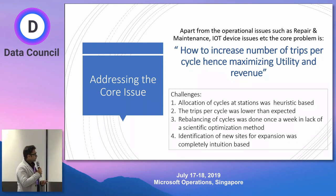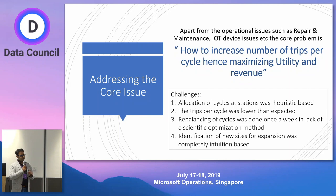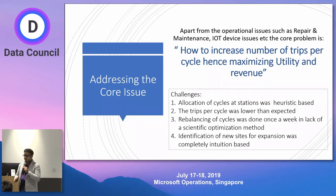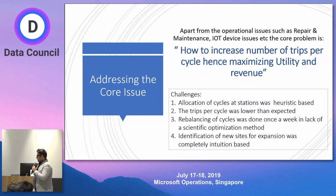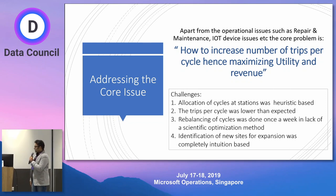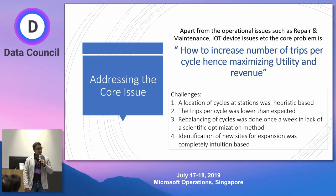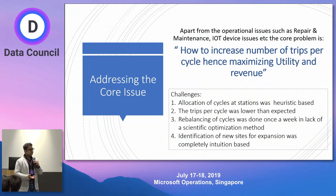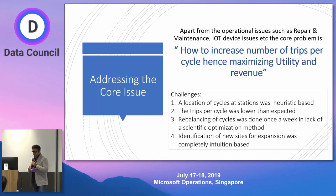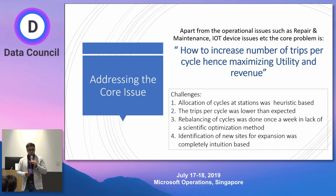Another challenge was that there was no scientific optimization method to rebalance cycles, and rebalancing was done only once a week. No one had the time to every day go pick up bicycles from one end of the city and bring them back. A lot of cycles that broke down during the week had no one caring for them. And the fourth challenge: where do you expand? How do you know how to expand to a new area? These are the challenges I'll discuss and how we solve them using data science.